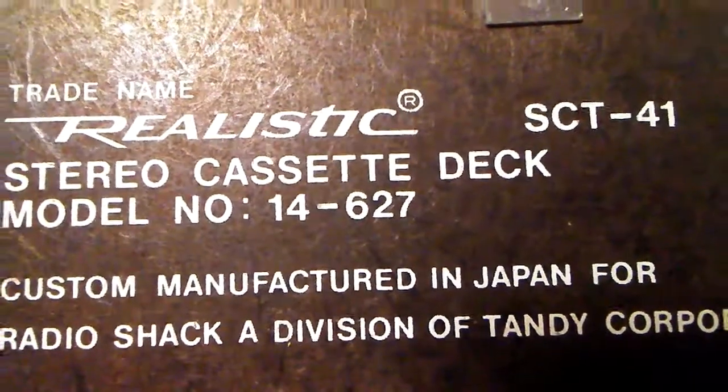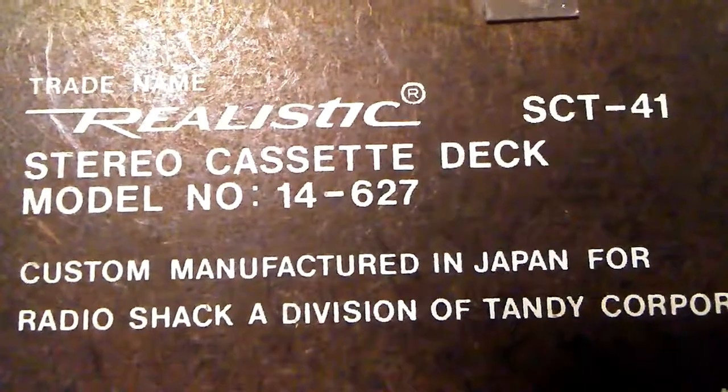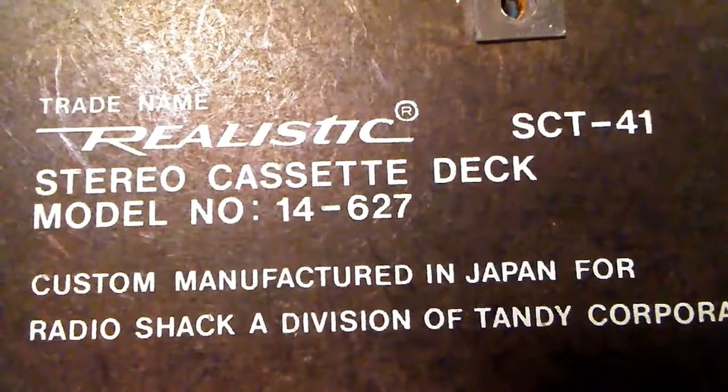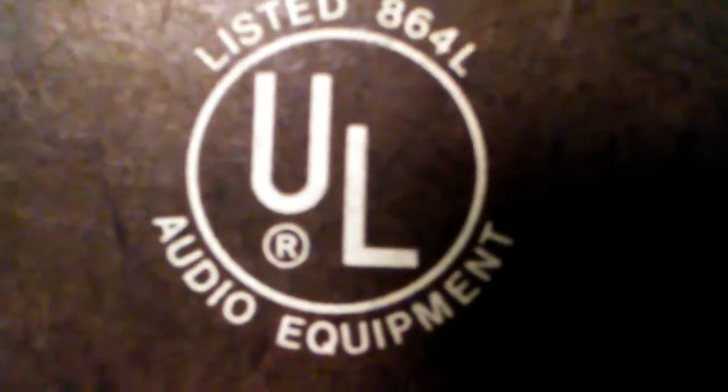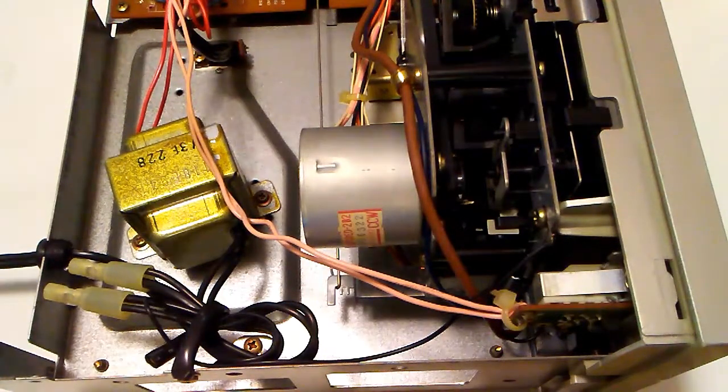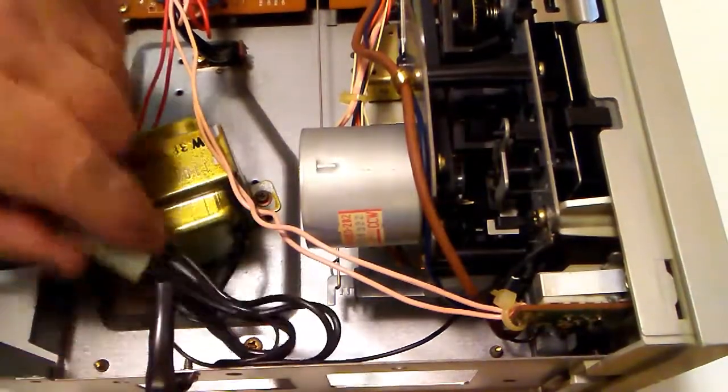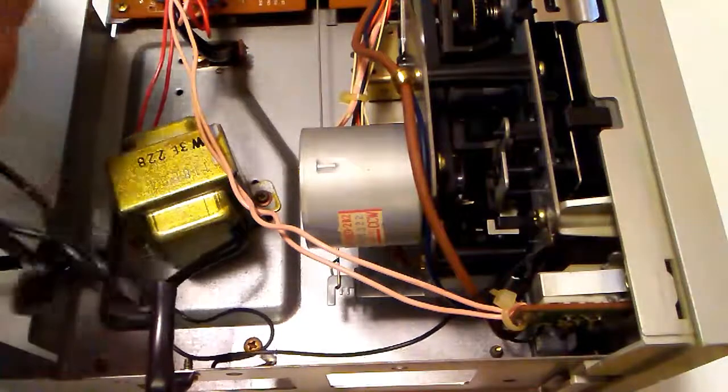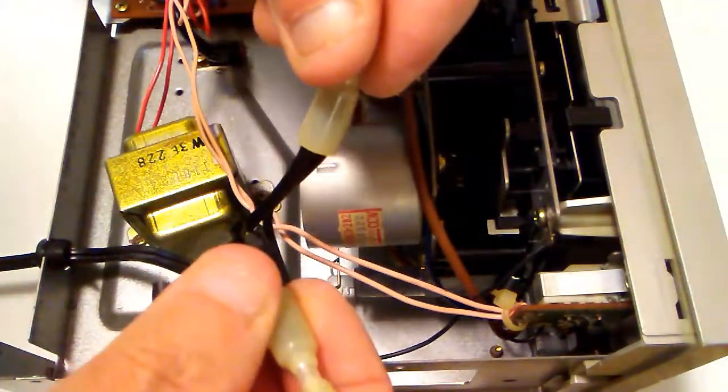Okay, here's a realistic cassette deck. It has a no-line fuse in it for overcurrent protection. There is the UL mark and here is the power supply. The power comes in and it goes straight to the transformer without any overcurrent protection.